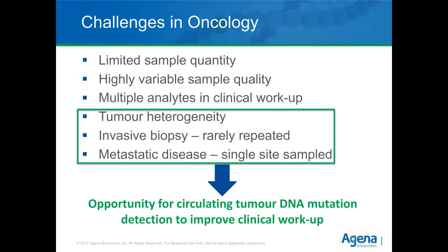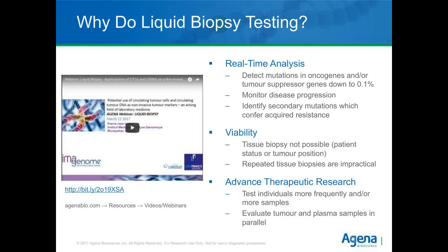However, it won't resolve all challenges. There will be a point where heterogeneity gets so low that you don't have tumor cells of the type you're looking for in your sample. The fact that biopsy is rarely repeated and only captures a single site won't be resolved by just improving sensitivity of tissue biopsy. These challenges represent the opportunity to look at circulating tumor DNA or circulating tumor cells to complement the clinical workup. We did present a webinar last month on liquid biopsy, accessible from the Agena Bioscience website, covering how our liquid biopsy panels can detect circulating tumor material down to 0.1% frequency to monitor disease progression.